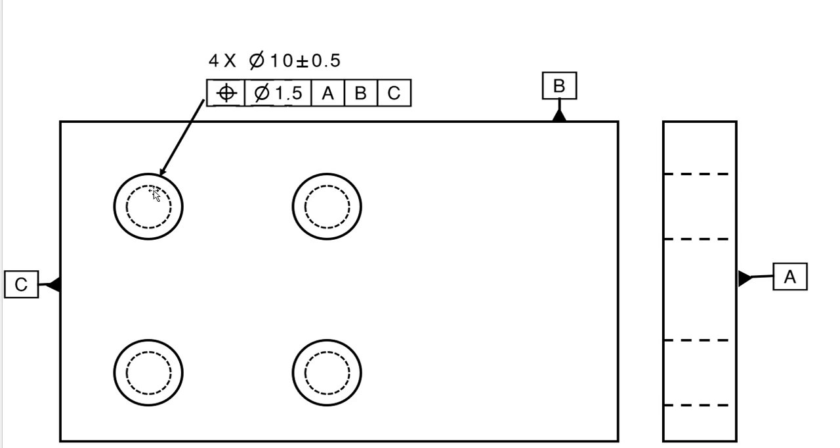Well, that means there's a circular tolerance zone, cylindrical actually, if you extrude it down the third axis, and the center of the cylinder needs to lie within there. Actually, it's the axis of the cylinder that needs to lie in that zone. But we're going to keep it simple and just think of circles and points.